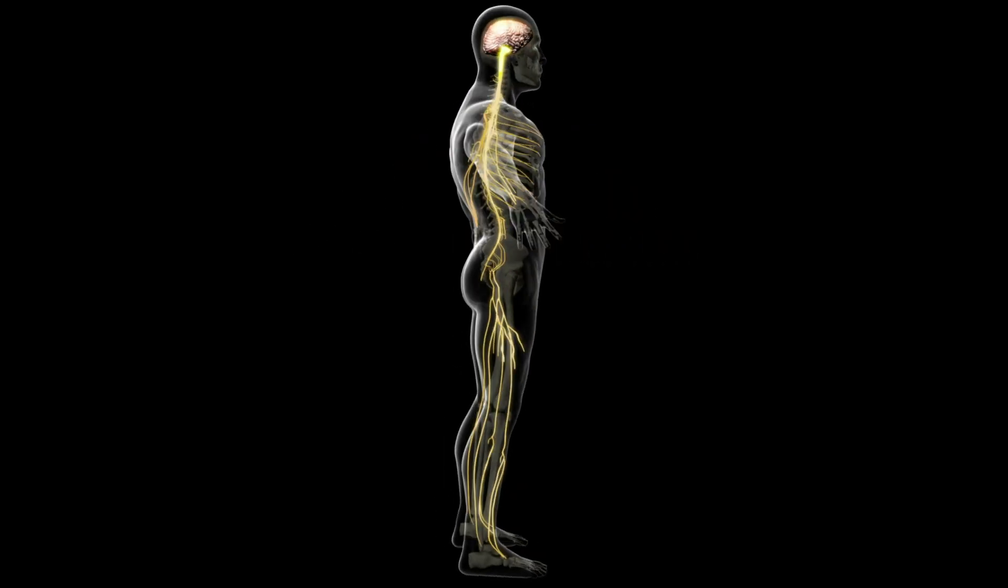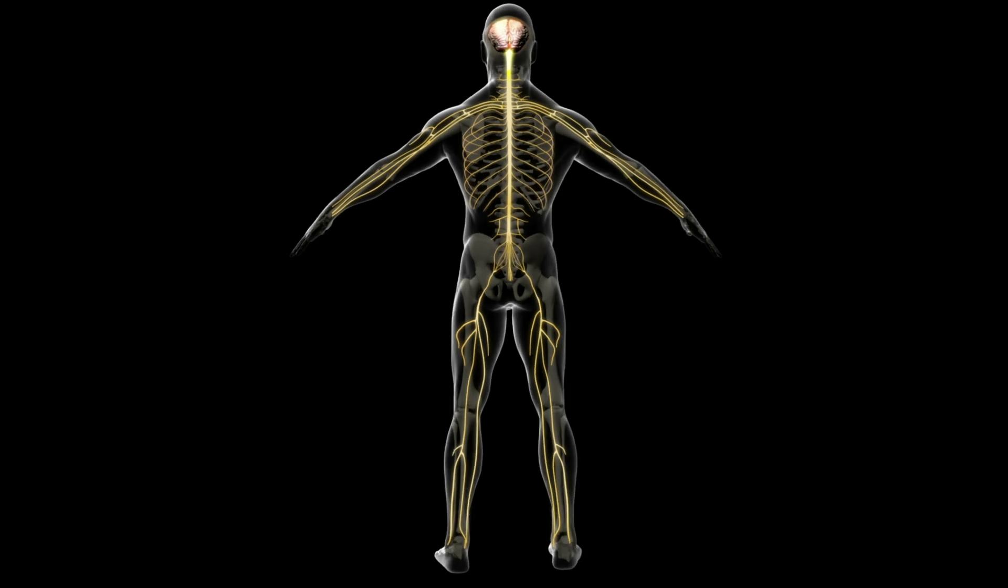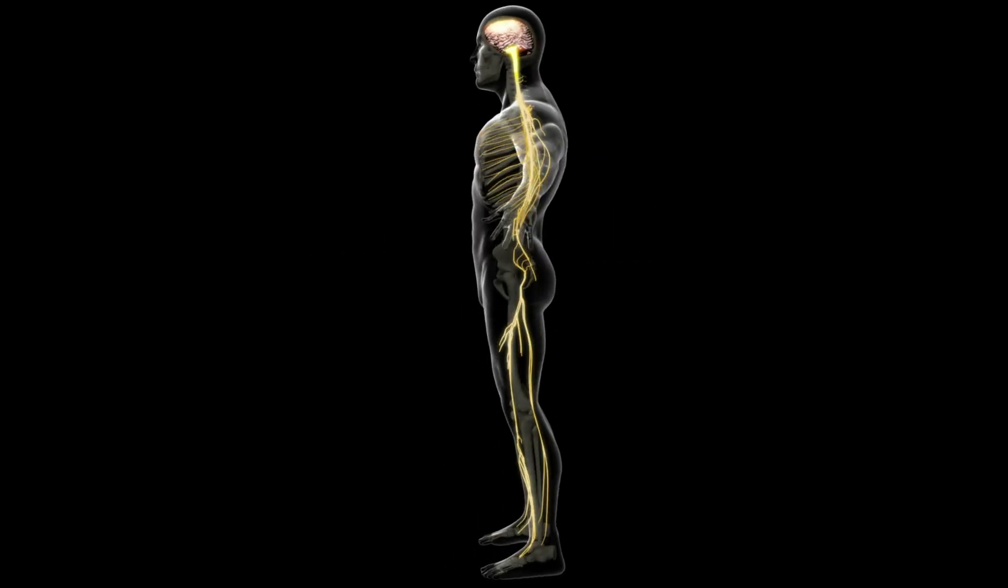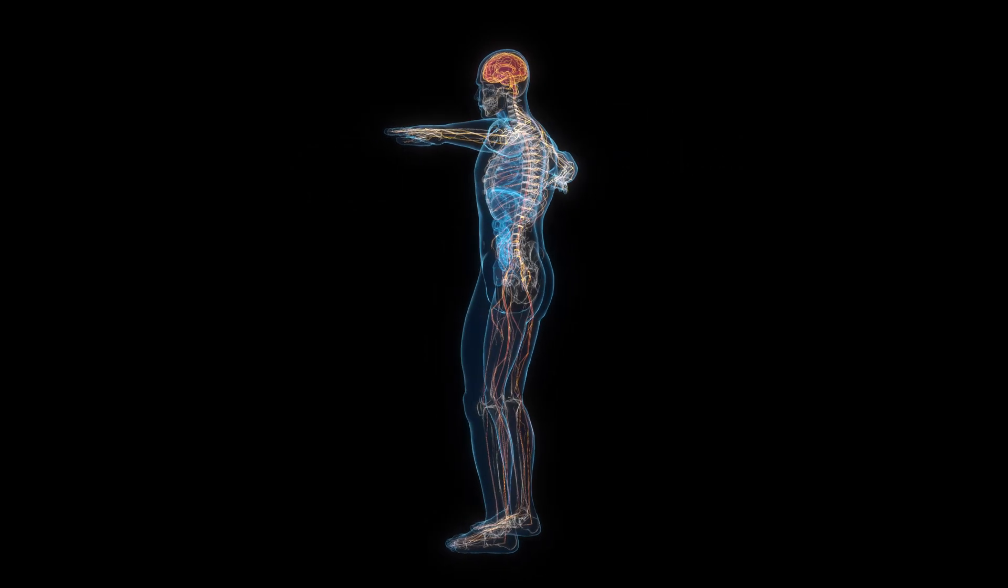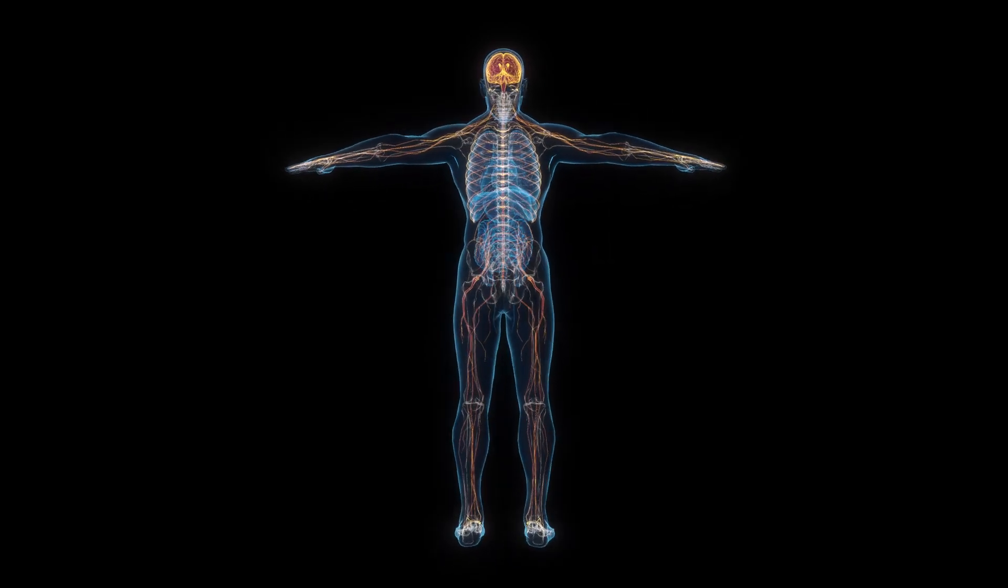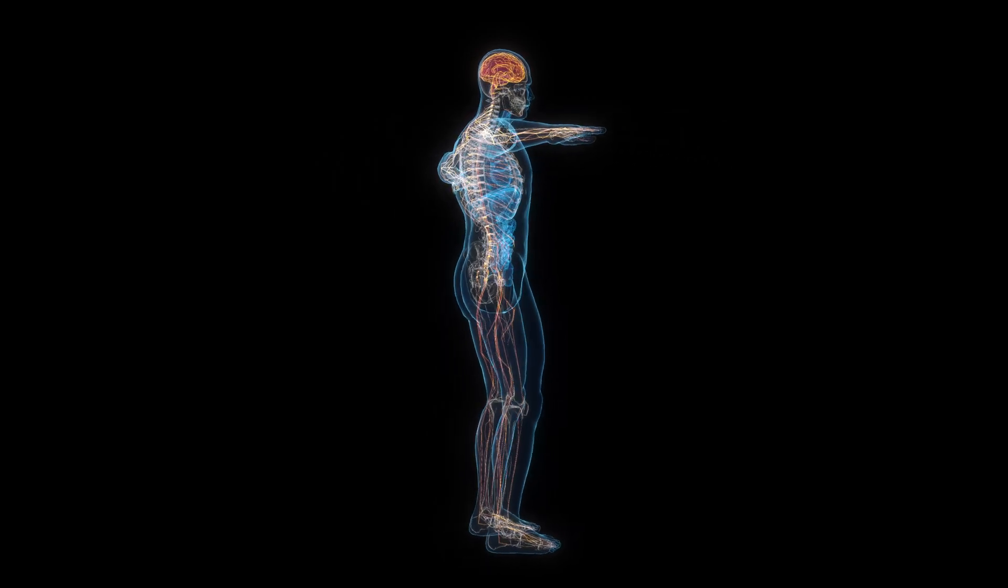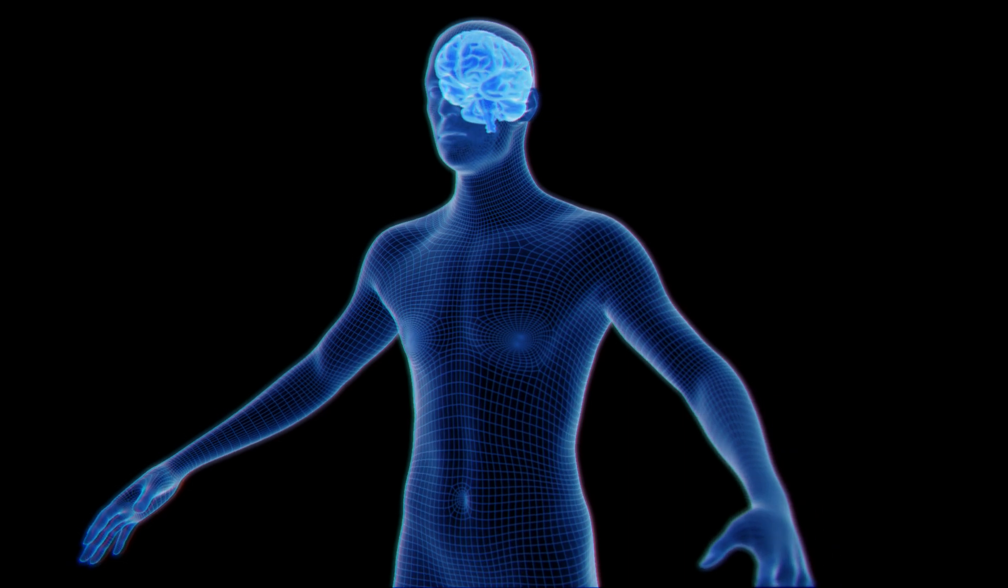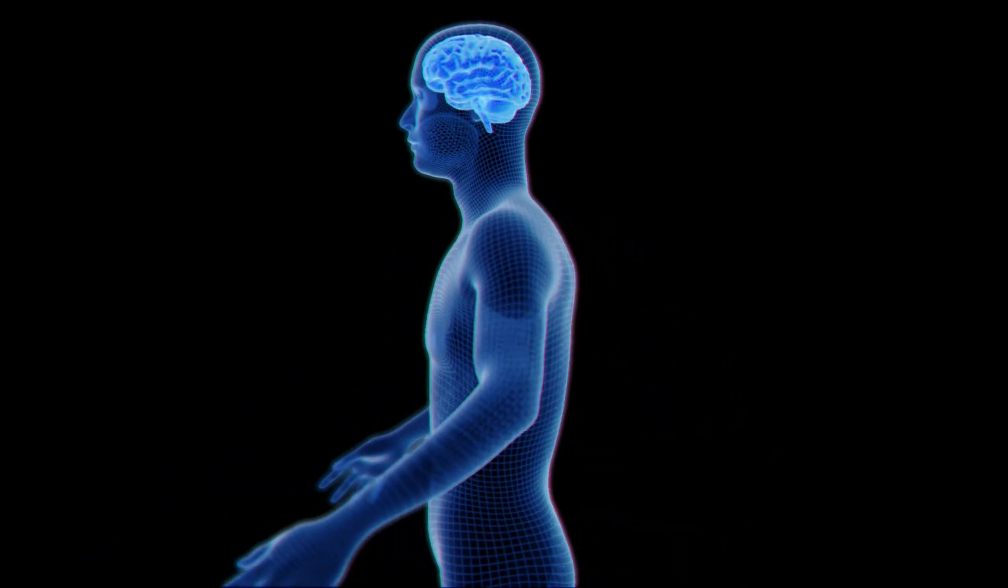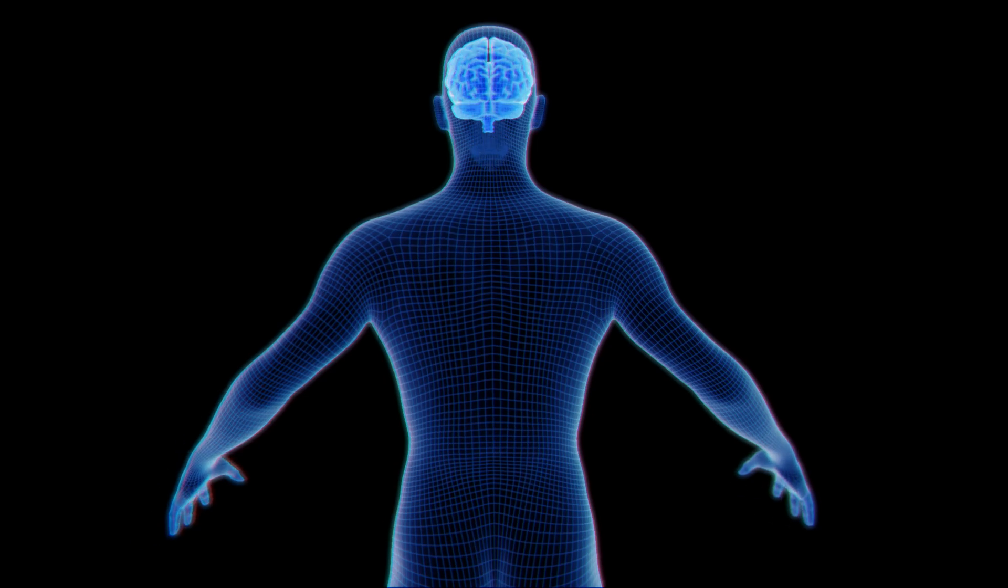As part of the peripheral nervous system, somatic nervous system controls voluntary movements and transmits sensory information to the CNS. It consists of motor neurons that control skeletal muscles and sensory neurons that convey information from the skin, muscles and joints to the CNS.